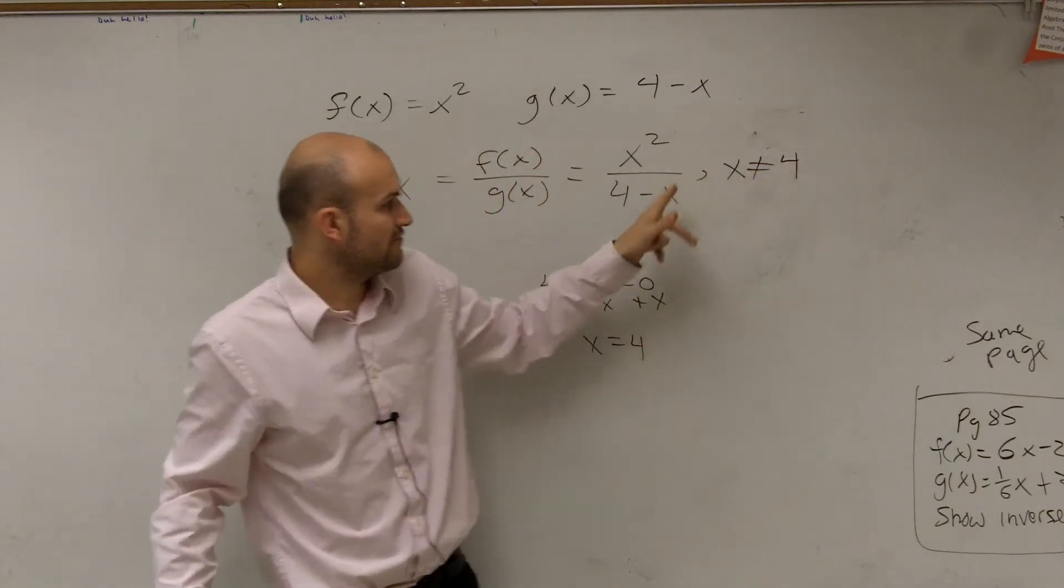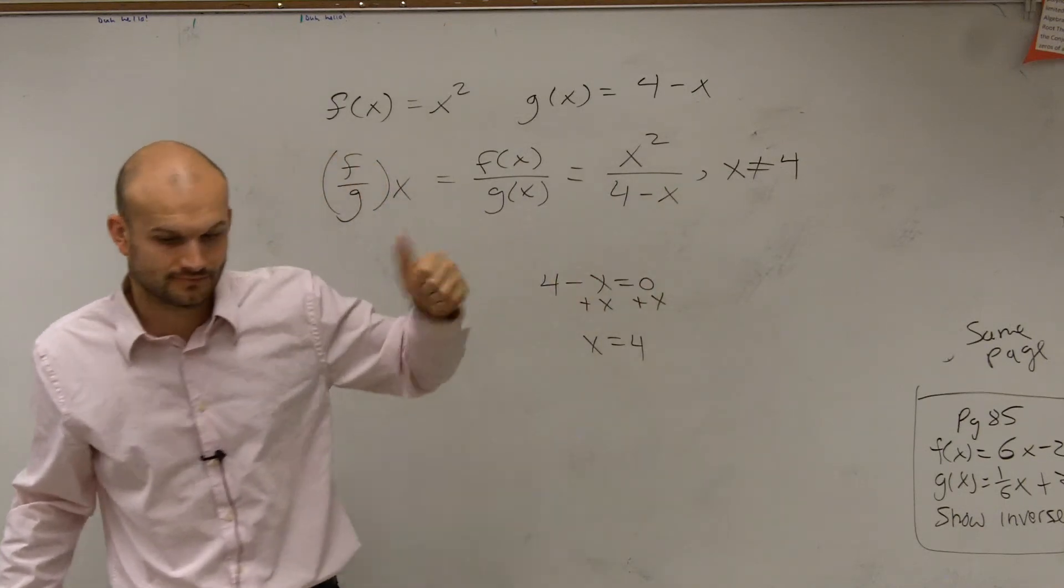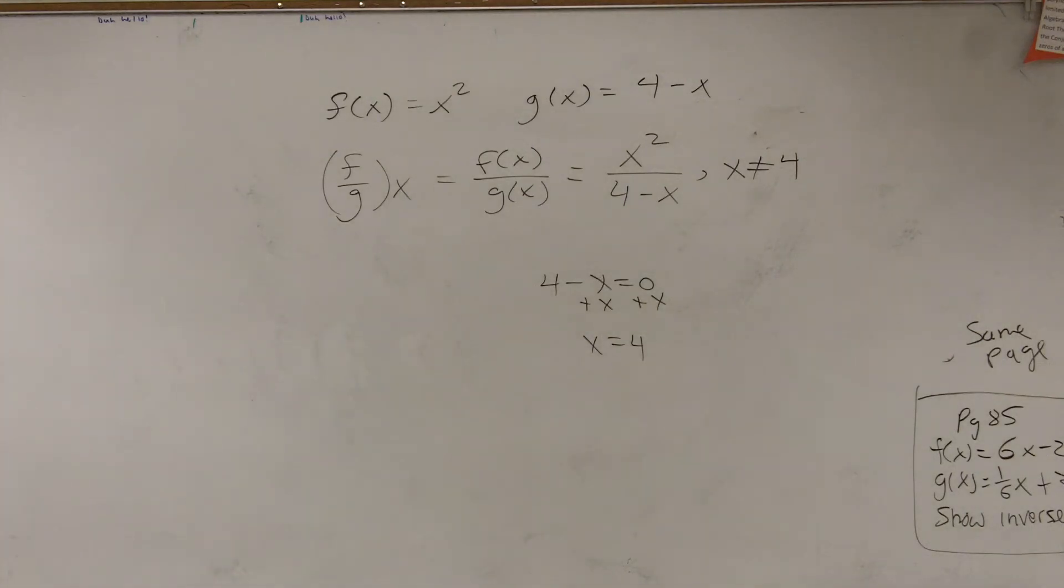Why? Because when you put a 4 in for x, you get a zero in your denominator, which is a no-no. Is that it? That's it.